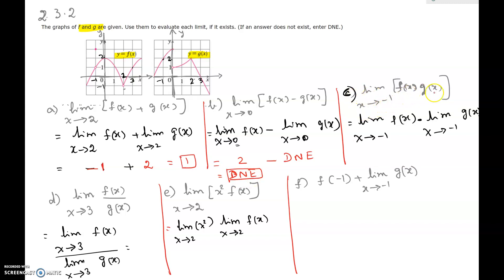Part c: limit as x approaching negative 1 of f(x) times g(x). By the property of limits, it's the limit of f(x) times the limit of g(x). For the limit as x approaching negative 1 of f(x), we look at f(x) in the neighborhood of negative 1 — there is a hole there and the y-value is 1. Times the limit as x approaching negative 1 of g(x), which is equal to 2. So 1 times 2 equals 2.